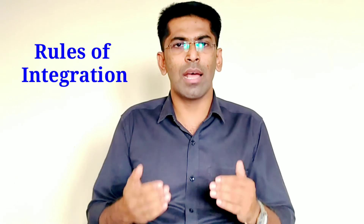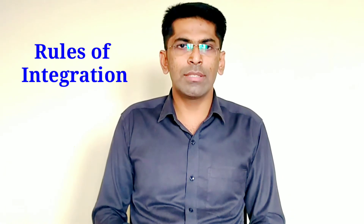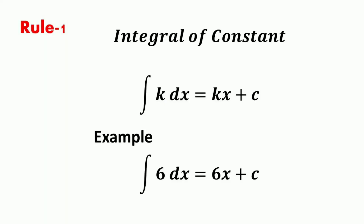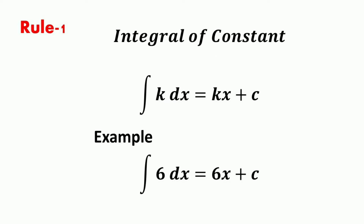These rules of integration are obtained by reversing the corresponding rules of differentiation. The first rule of integration is that the integral of a constant is equal to that constant times the variable of integration plus an arbitrary constant. That is, the integration of constant k with respect to x is equal to kx plus c, where k is the constant, x is the variable of integration, and c is the arbitrary constant.